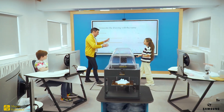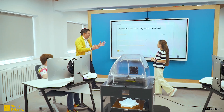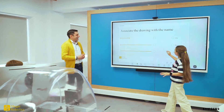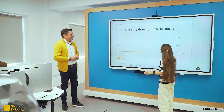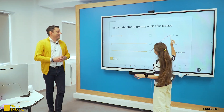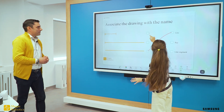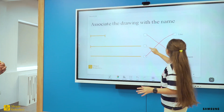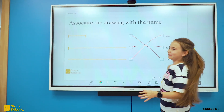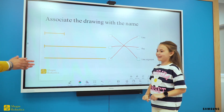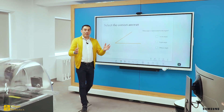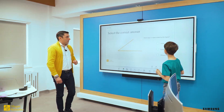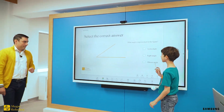Match the drawings with the correct names. This is so easy! This is a line, this is a line segment, and this is a ray. Great, very good! Thank you. Micha, it's your turn — select the correct answer.